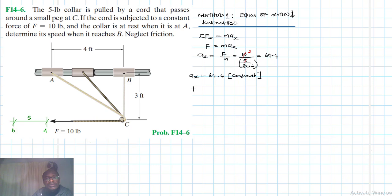Our acceleration ax equals 64.4, and this is constant. In finding the velocity, we need S. S is equal to AC minus BC, which equals the square root of 3 squared plus 4 squared, minus 3. So S equals 5 minus 3, which equals 2.